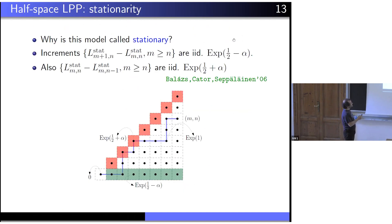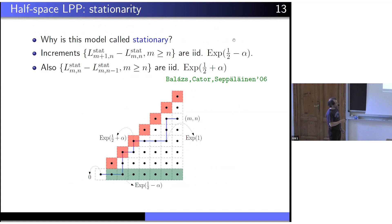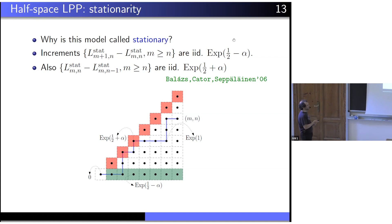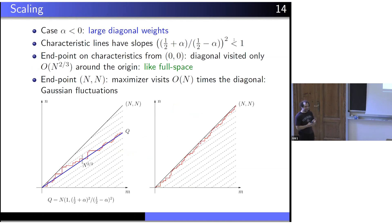This model is called stationary because it has a specific property: the increments along the diagonal, along horizontal lines, and along vertical lines are all i.i.d. exponential with the same parameter. In other words, if you look at increments along any such line, they are i.i.d. exponential. This was proven by Barraquand, Corwin, Pimentel, and others already in 2006 for the full space; for the half-space the proof is essentially the same.